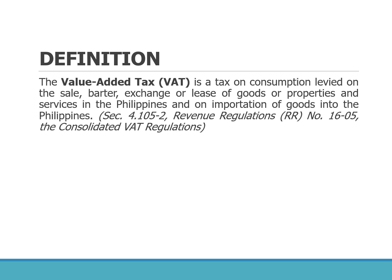There are four different transactions subject to VAT: a sale, a barter, an exchange of property, or the lease of goods. So the first three — sale, barter, or exchange — relate to disposal of property. The four general transactions subject to VAT are: sale of goods or properties including barter or exchange, lease of goods or properties, rendering of services, and importations.